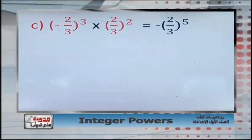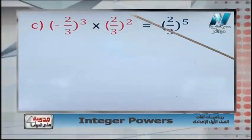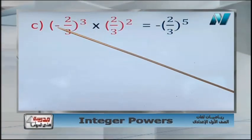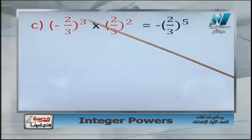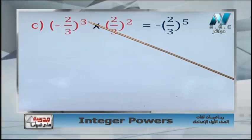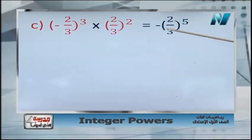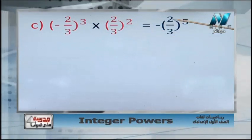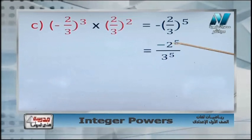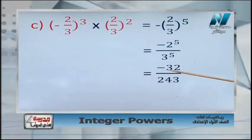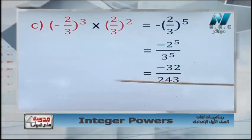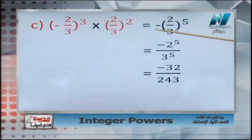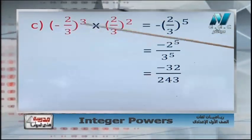Another one: negative 2 over 3, all power 3, times 2 over 3, all power 2. These numbers are the same except for the negative sign. Look at the power — it is 3, which is an odd number. With an odd power, the sign is expelled and stays. So: same base 2 over 3, add the powers, 3 plus 2 equals 5. Distribute 5: 2 power 5 over 3 power 5. Calculate: negative 32 over 243. If the power were even, we would cancel the sign.